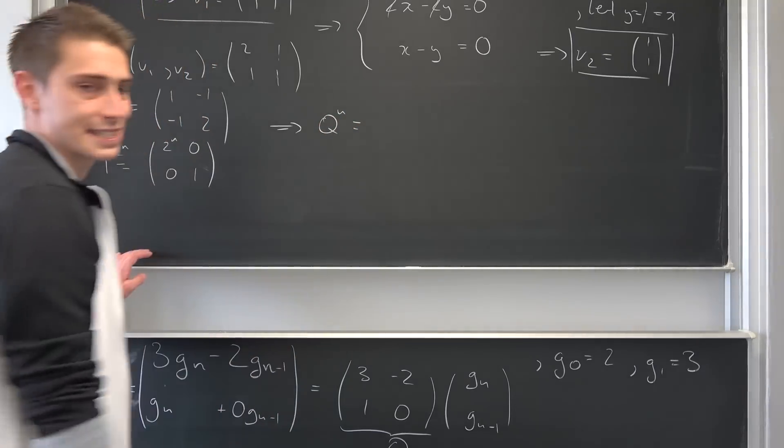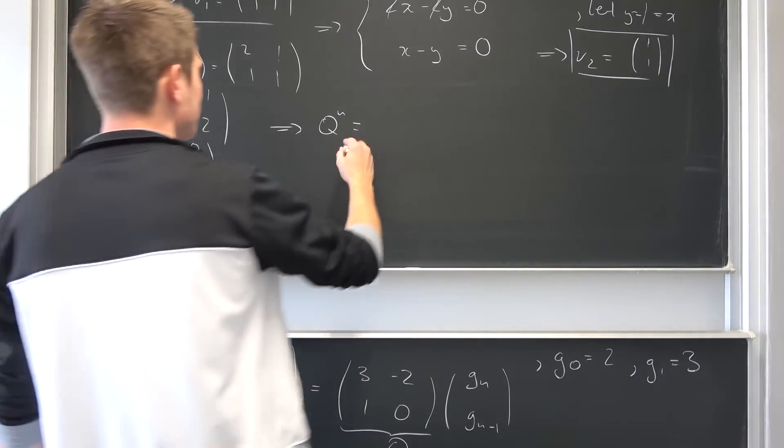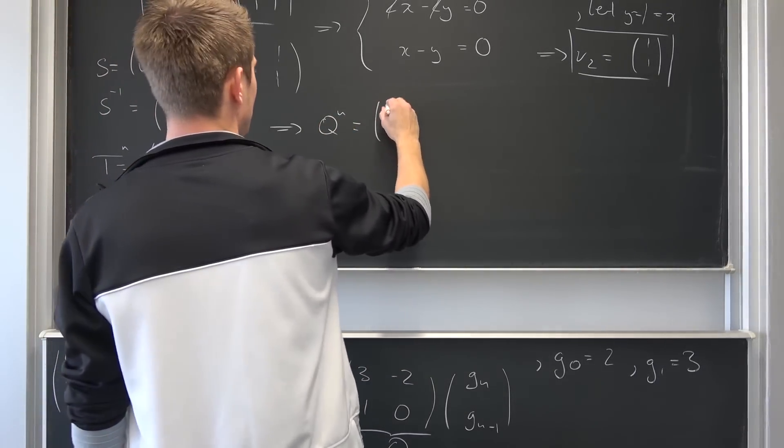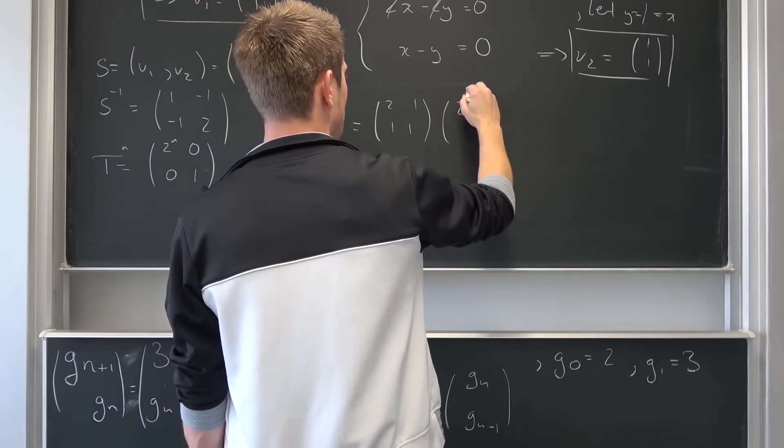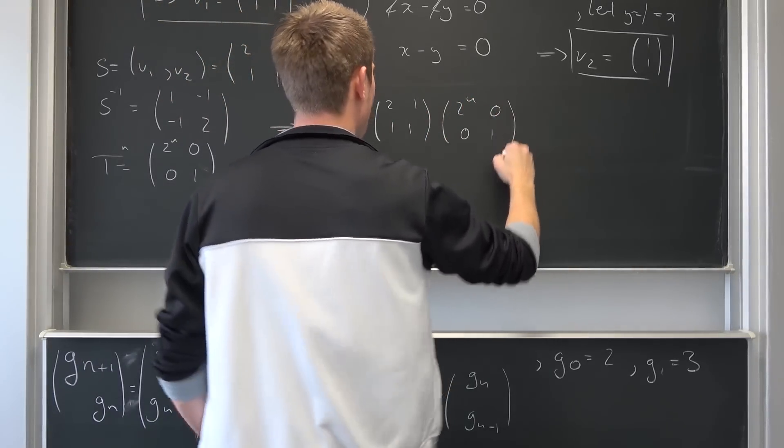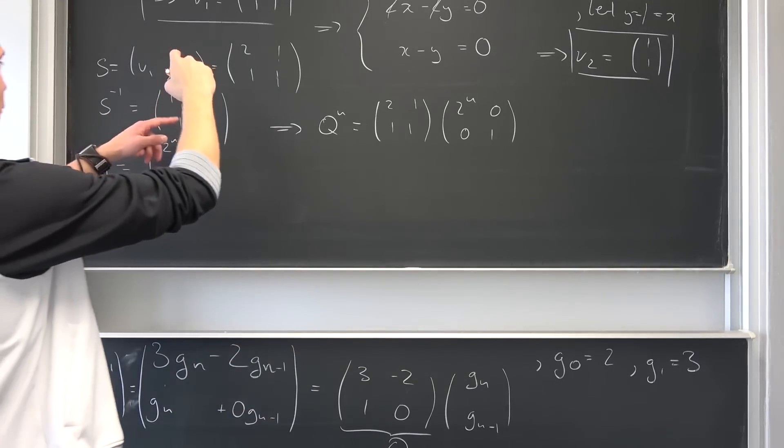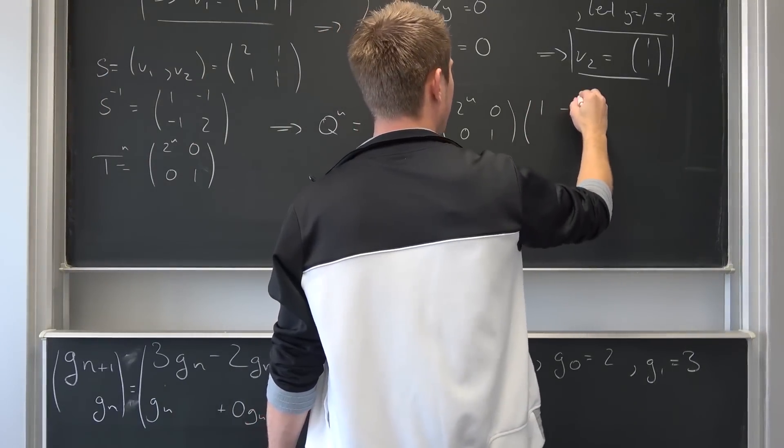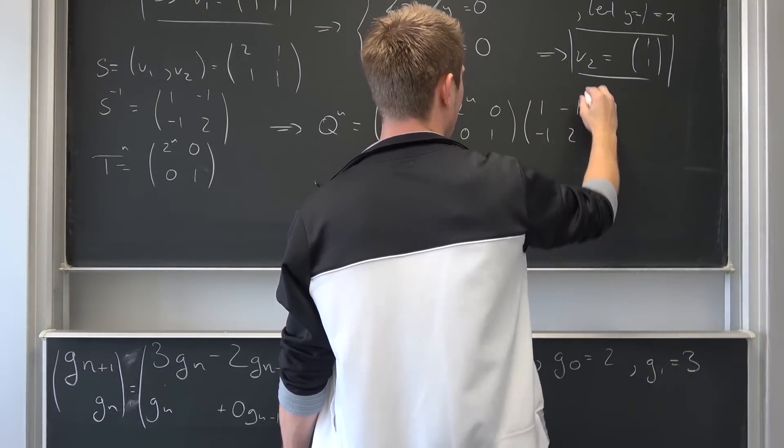Meaning overall, Q to the nth power is thus nothing other than - we are going to have 2, 1, 1, 1 and then 2 to the nth power, 0, 0, 1, and also we are going to have 1, negative 1, negative 1, negative 1 and 2.